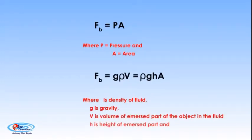Where rho is density of fluid, g is gravity, V is volume of the immersed part of the body in the fluid, and H is the height of immersed part in floating objects.